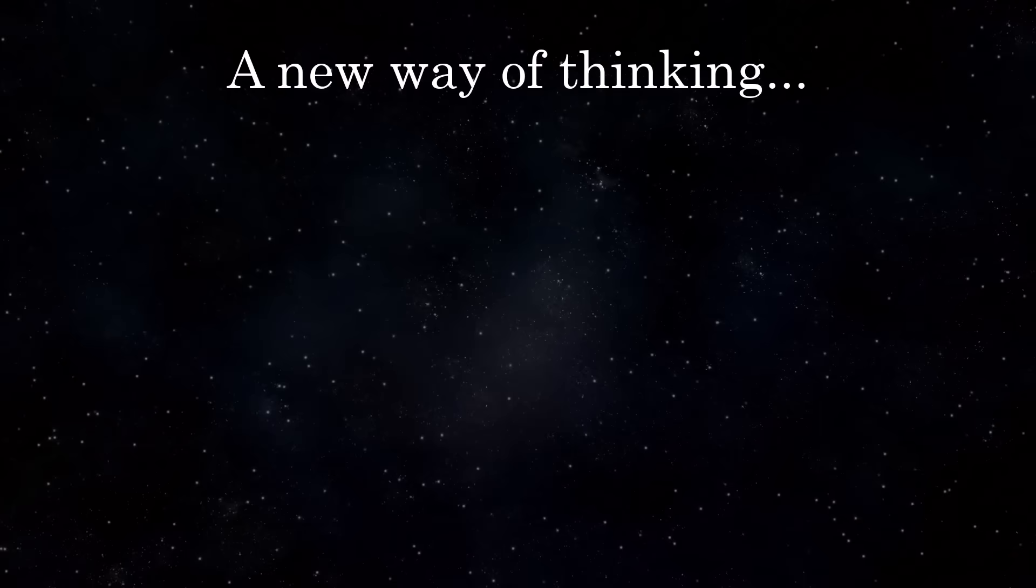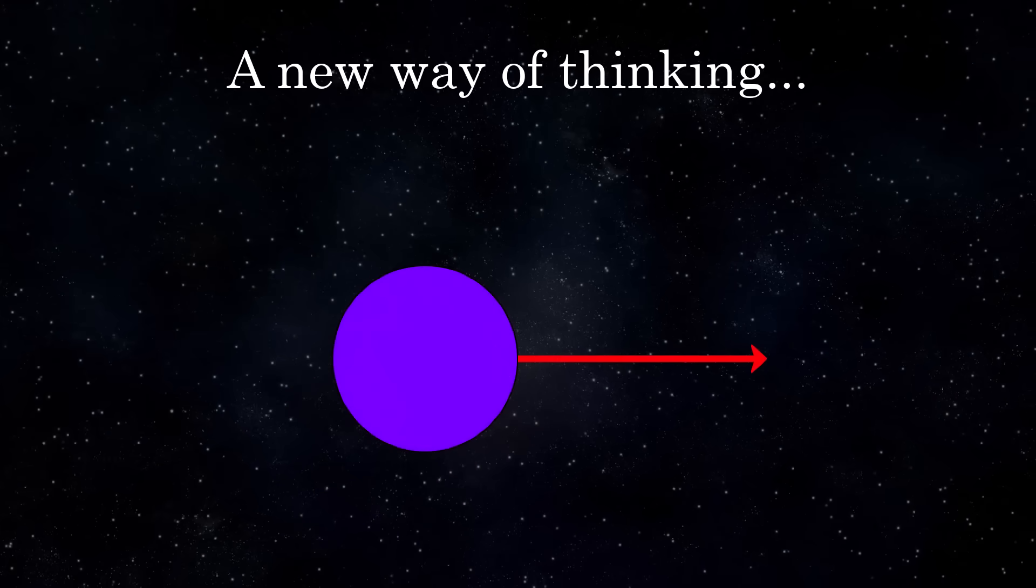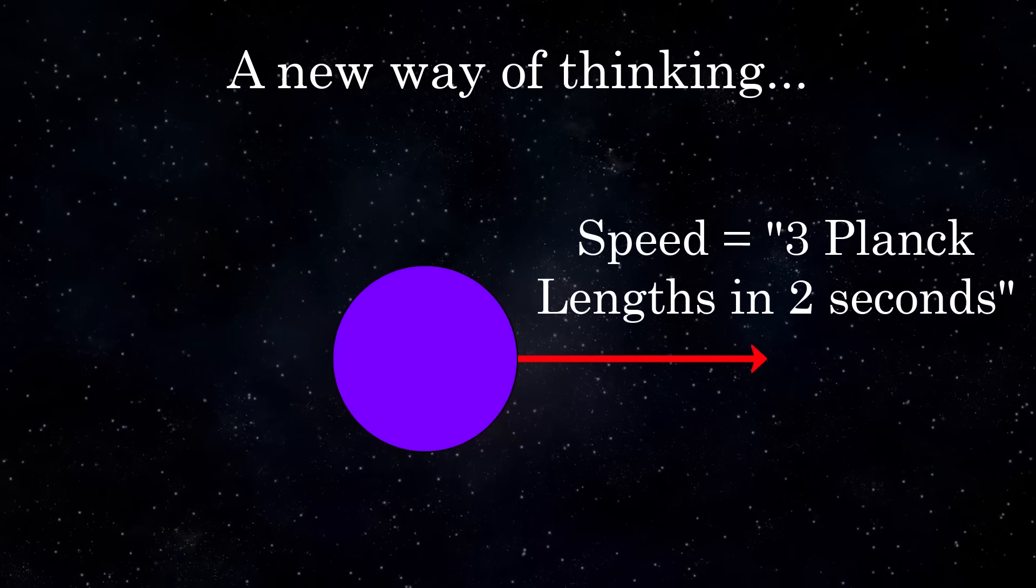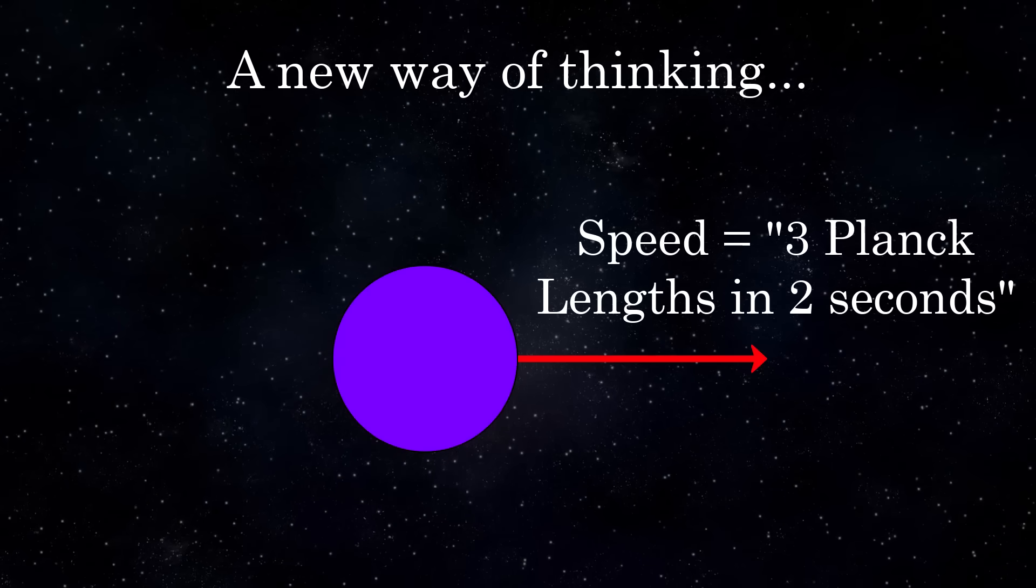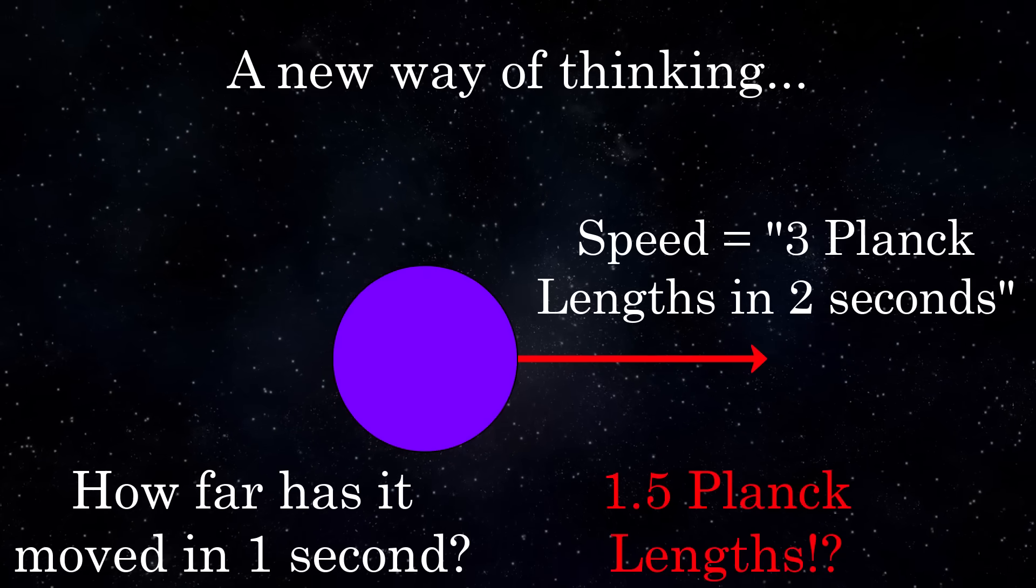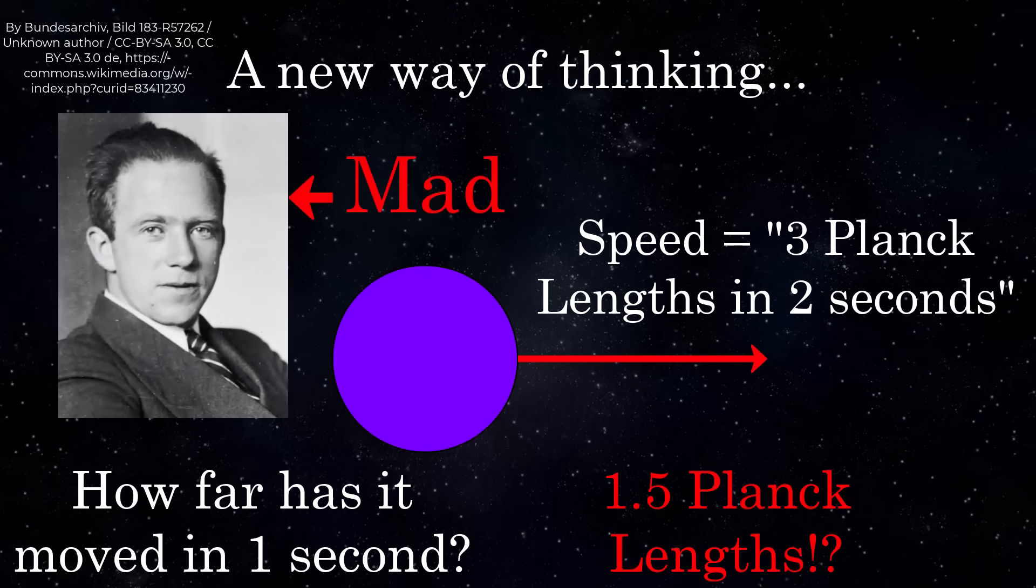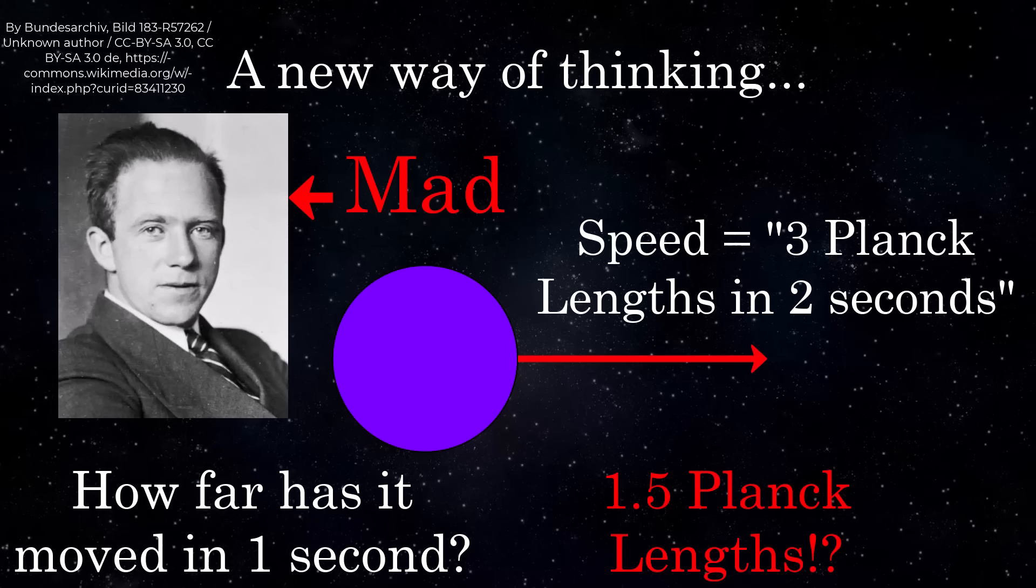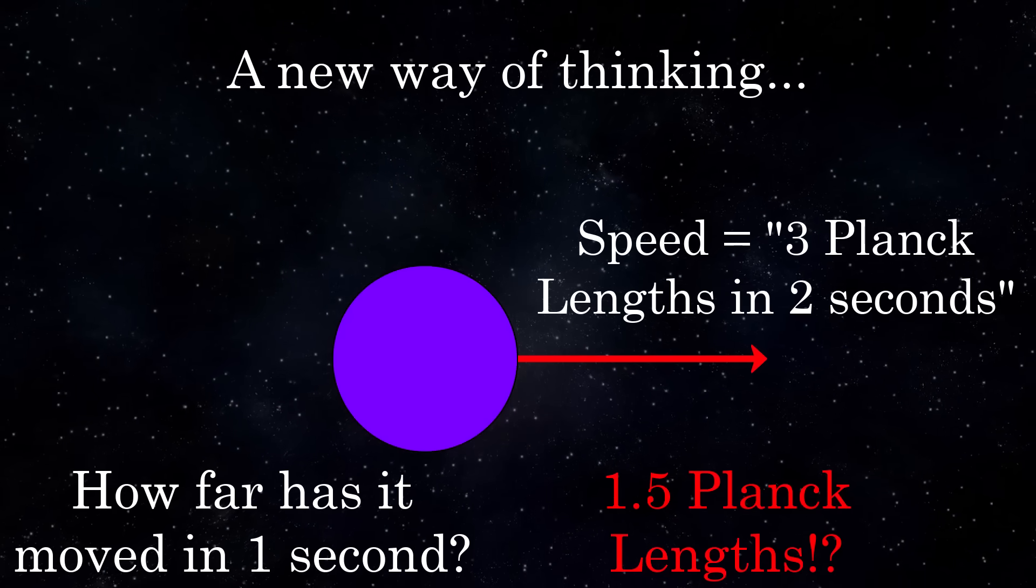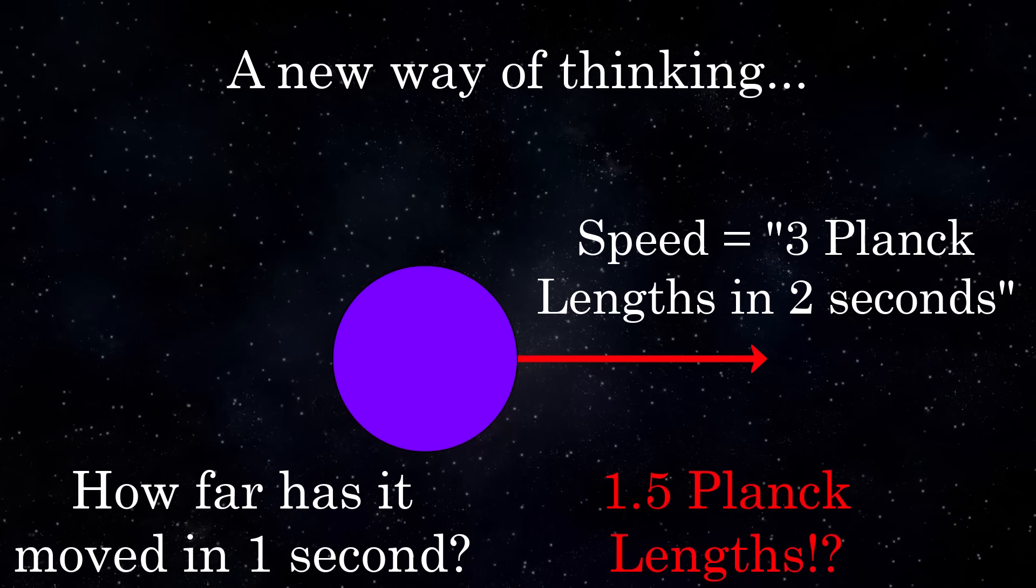You might be wondering how this can all make sense. You might consider a scenario where a particle or an object is moving through space, let's say it moves at a constant speed and covers three Planck lengths in two seconds. Then you might think to ask how far it has travelled in one second, and get to the answer of one and a half Planck lengths, and then incorrectly believe that you can predict motion below the Planck scale. Besides the fact that the Heisenberg uncertainty principle would have something to say about such precision, this is also wrong because you would be considering the system classically.